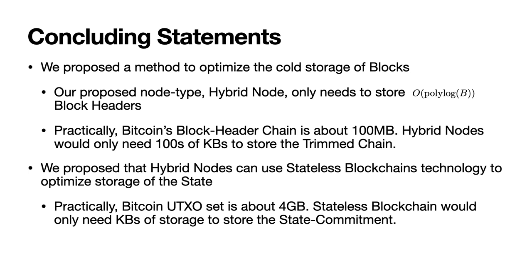To conclude, we proposed a method to optimize the cold storage of blocks. Our proposed node type, hybrid nodes, only stores order polylog B blocks as compared to conventional order B blocks. Practically speaking, Bitcoin's block header chain is currently about 100 megabytes in size — trimming could reduce this to the order of hundreds of kilobytes. This may matter in case a node wants to store multiple blockchains or in high-throughput blockchains where the chain grows really fast. Additionally, we suggest that hybrid nodes may use stateless blockchain technology to further optimize the hot storage of the state. Practically, Bitcoin's UTXO set is about 4 gigabytes in size, whereas stateless blockchains could need only on the order of kilobytes to store their state commitment. Thank you for listening.